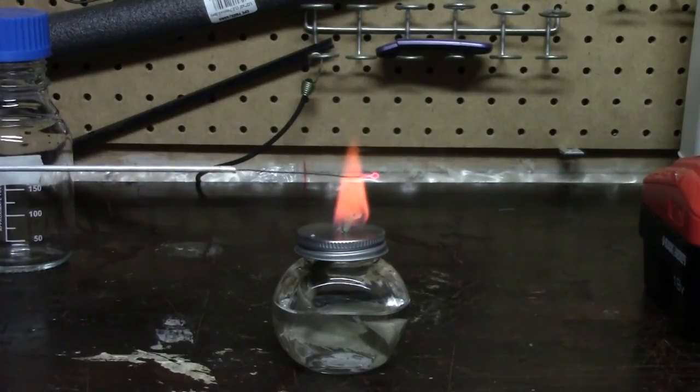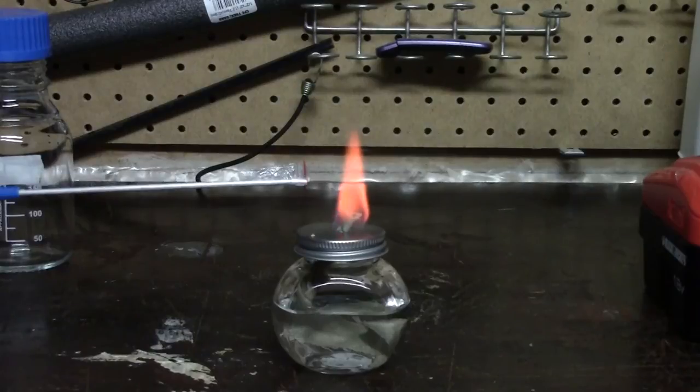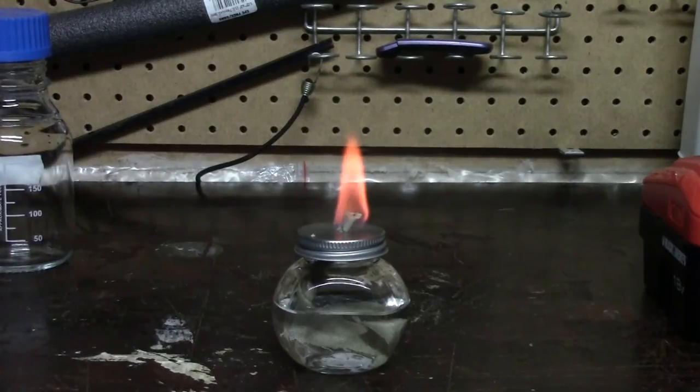And there you can see the loop's red hot. So that is obviously going to be completely sterile. And we can now use that to go into a plate or a source of cells to get some yeast without having to worry about contaminating the yeast.